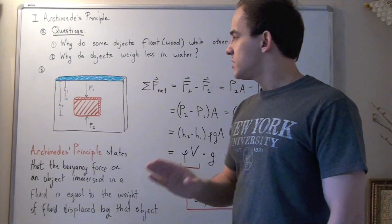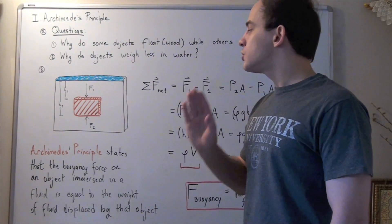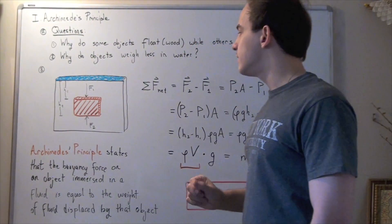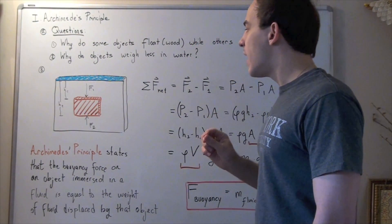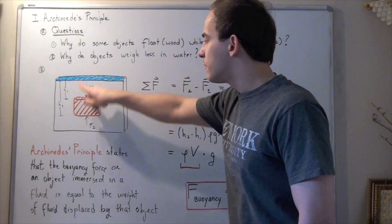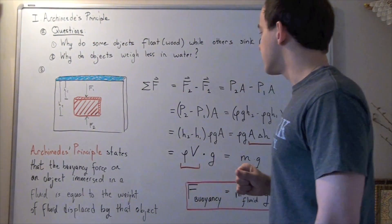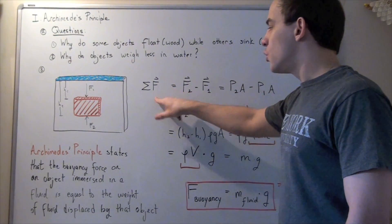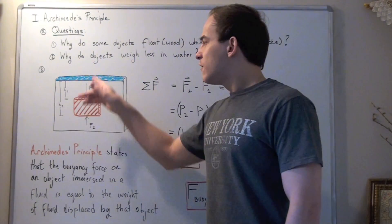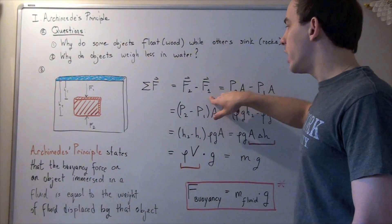But we're only looking at the forces acting along the Y axis. So let's choose going up to be positive and going down to be negative, and let's find the sum of the forces along our Y axis. The sum is equal to F2 minus F1.